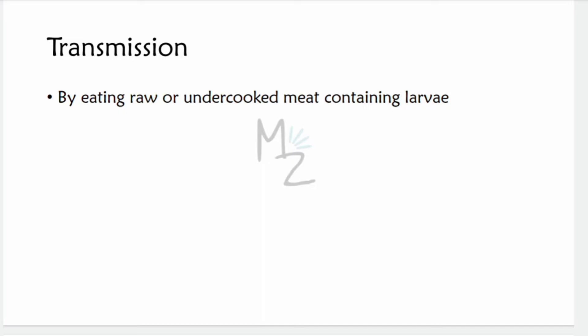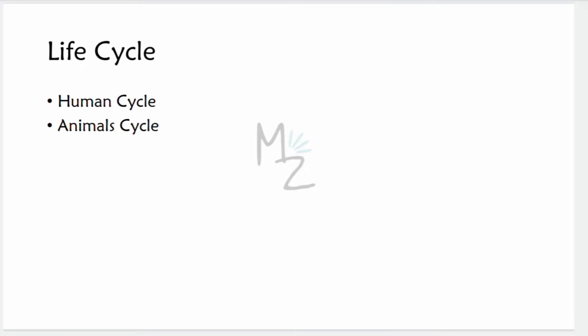Transmission occurs primarily by eating raw or undercooked meat containing larvae. Less likely, transmission can also occur via the fecal-oral route.